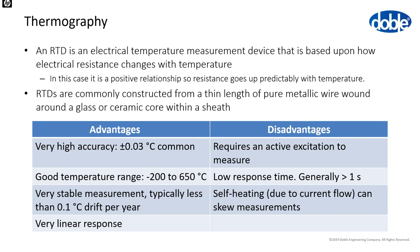RTDs are generally cheap, offer high accuracy, a good temperature range, stable measurements, and a linear response. Disadvantages: they must be actively excited, which can affect measurement precision in some cases, and their response time is slower than some other sensors, meaning temperature changes are not detected as quickly.